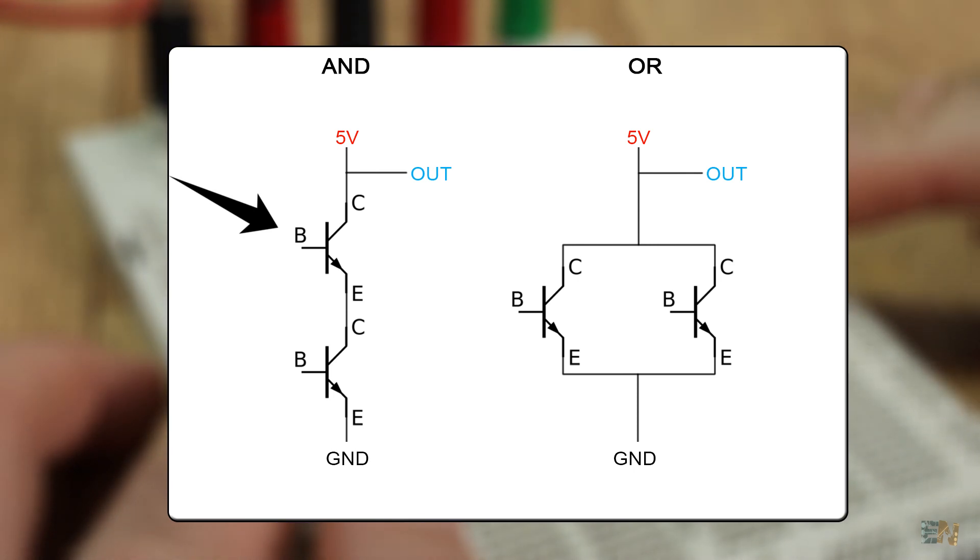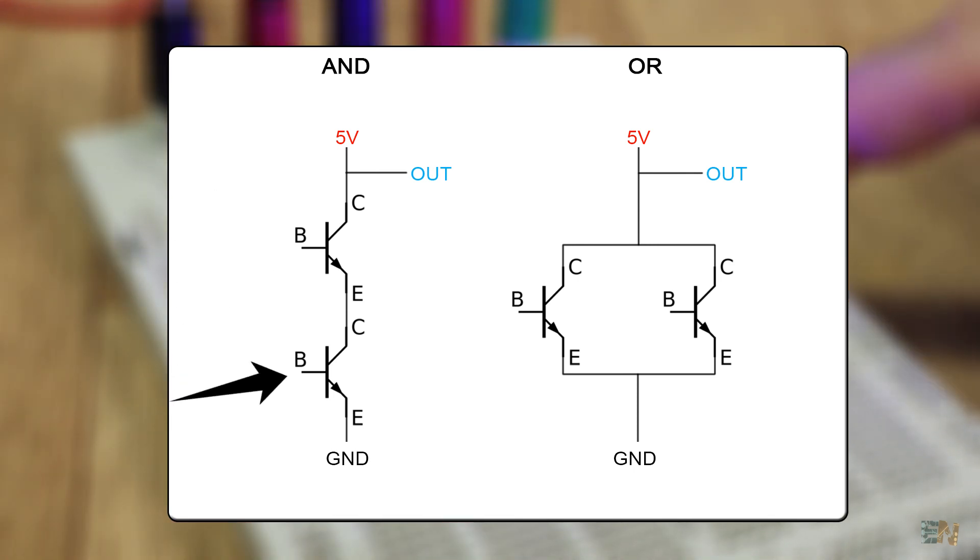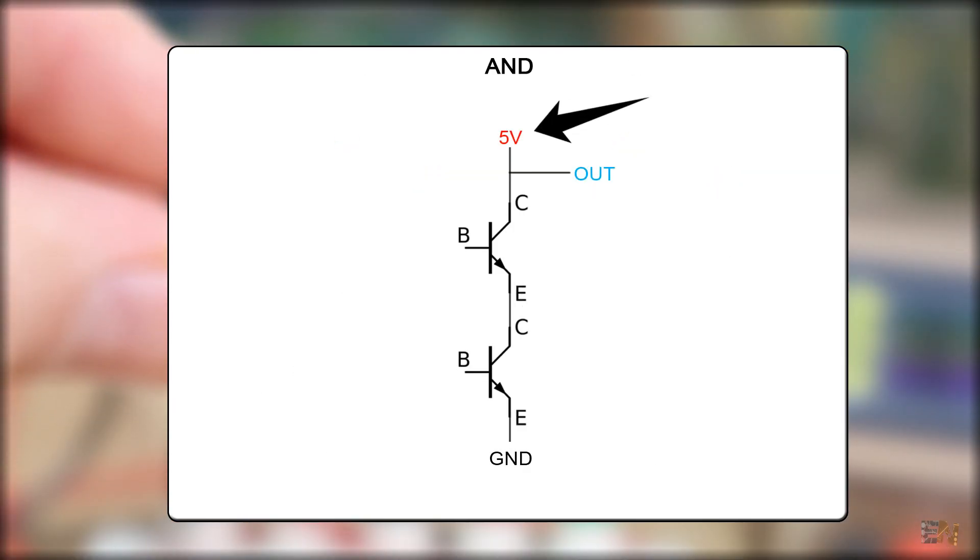As an example, here, we have the schematics for an AND and OR gates, with two inputs made with NPN transistors. Consider the transistors as a normal switch activated with a 1 and deactivated with a 0. In case of this double input AND, we have 5 volts, then our output, then the two transistors in series and then ground. If I activate just one of these two switches, the current flow won't be possible. Only when I activate both of them and that makes this circuit an AND gate.